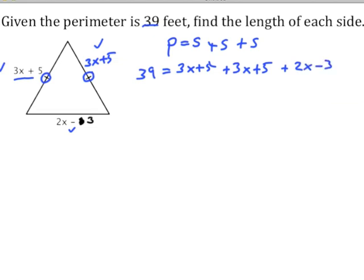Now we need to solve this equation for x. First I've got 3x, 3x, and 2x. Together that makes 8x. Then I have plus 5 plus another 5, which makes 10, minus 3. 10 minus 3 is plus 7, and that equals 39.